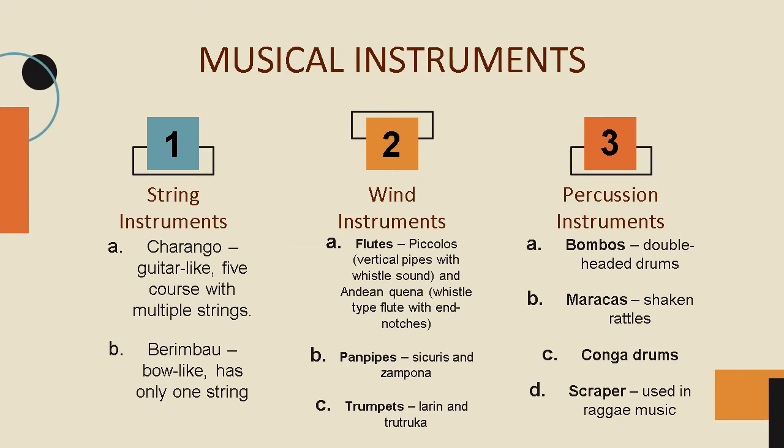The second category are the wind instruments, which make use of air to create sound. Flutes were the predominant wind instruments, and the famous flutes were piccolos.